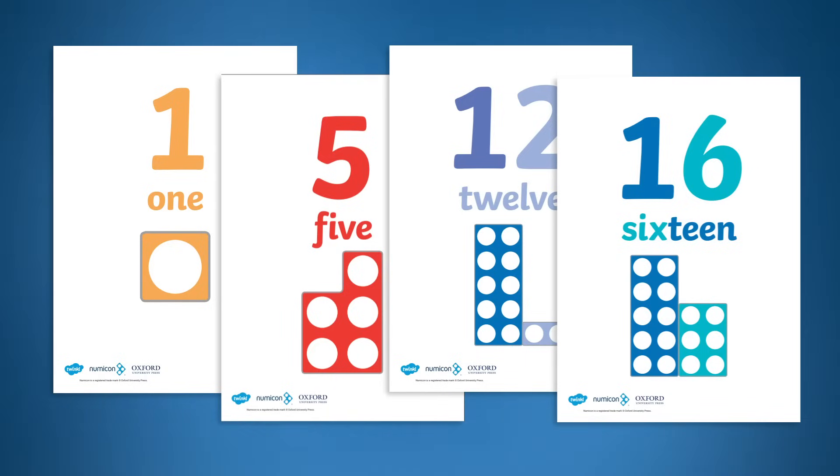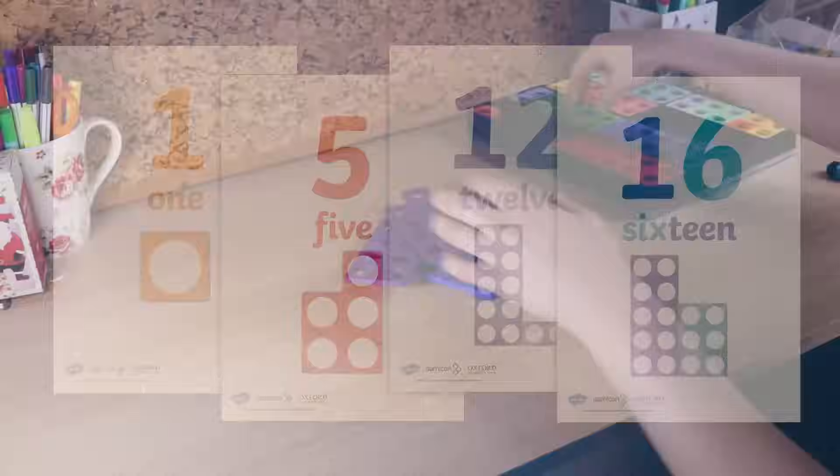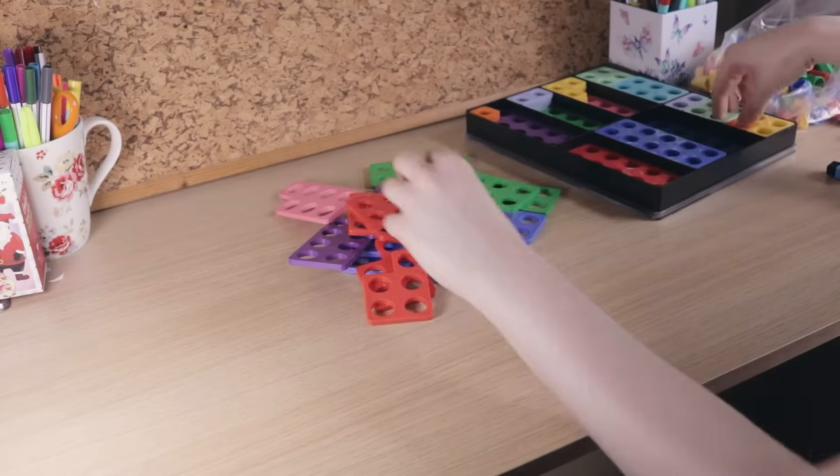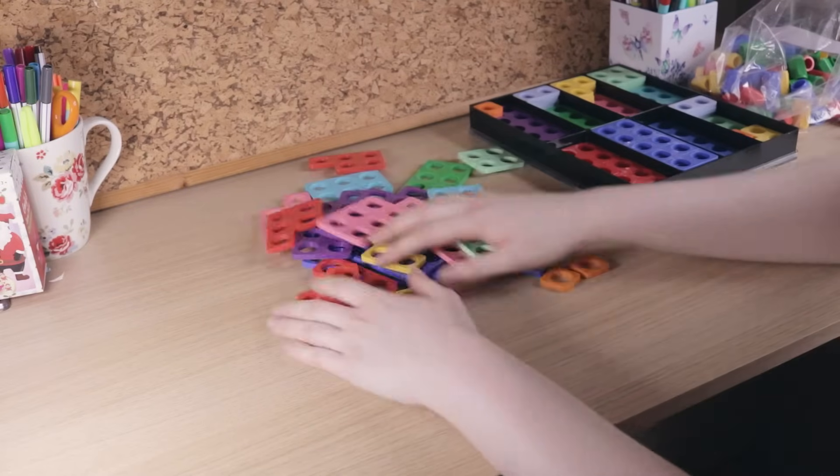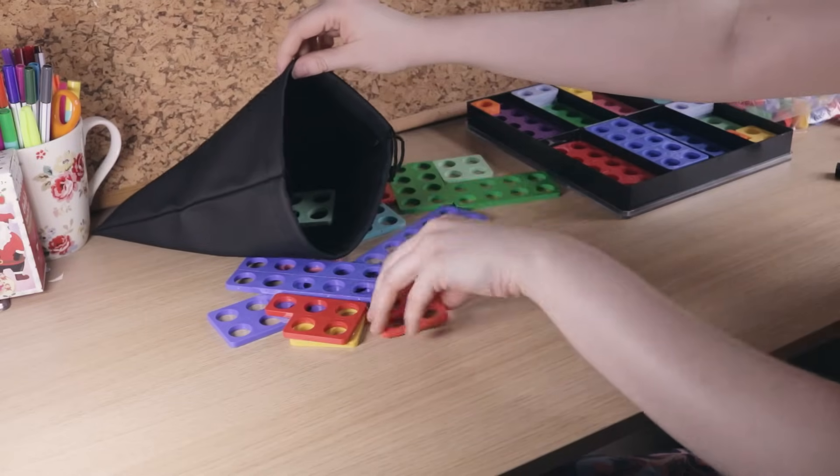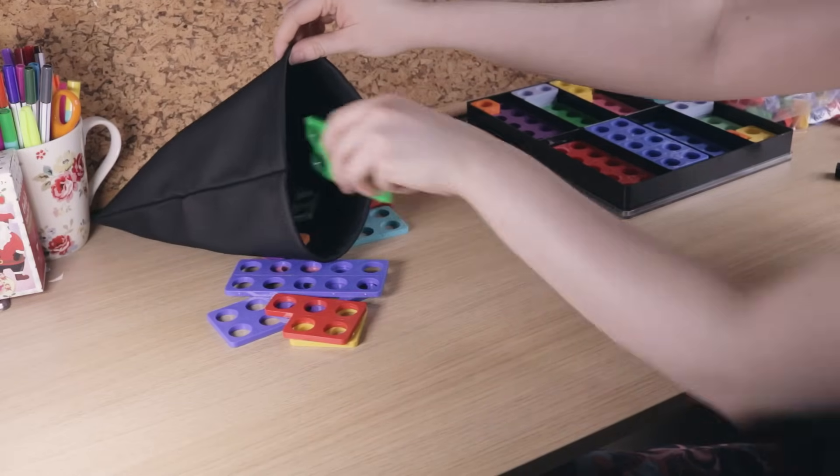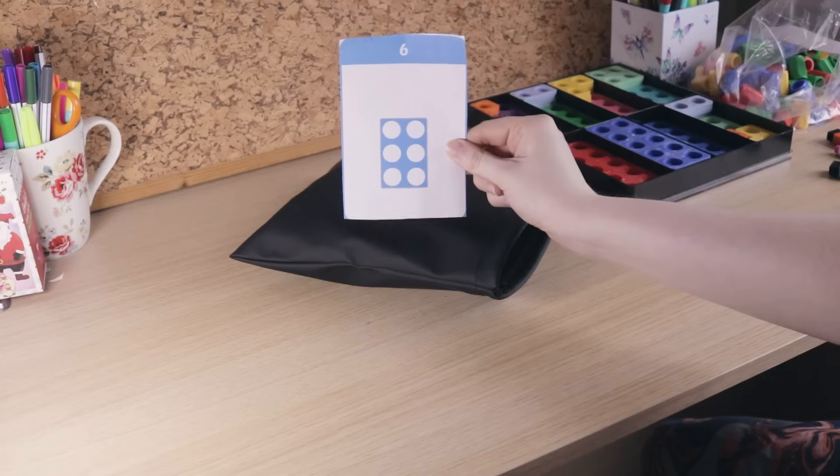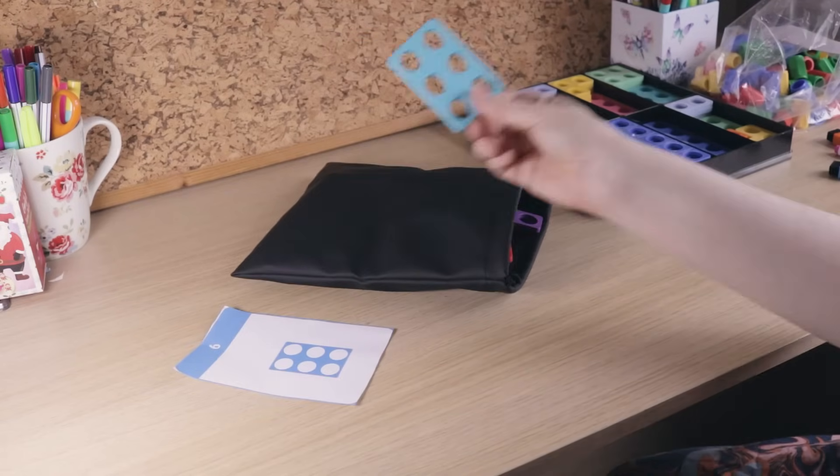You could play games with the whole class or in groups. One Twinkle teacher would pile Numicon in the center of a group table and call out the different numbers. Then children had to pick out the right shape. You could also do this by putting the shapes in a feely bag and asking the children to find the right shape by feeling and imagining what it looks like.